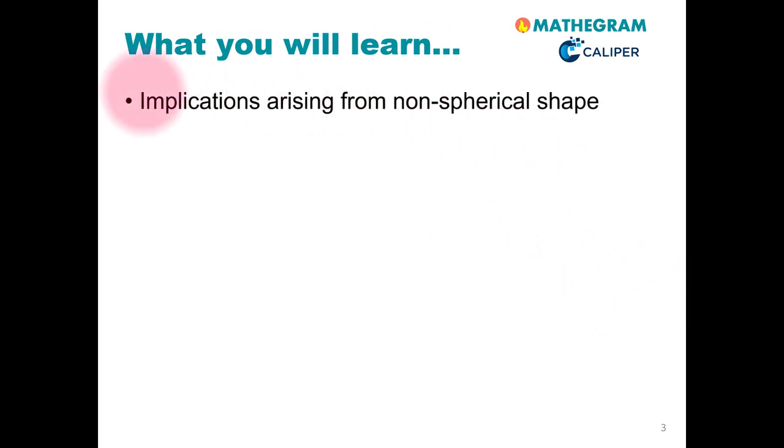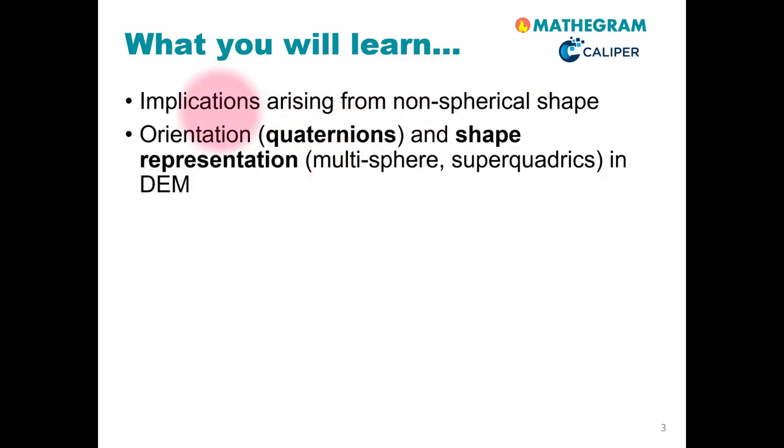First, I would like to go into the implications arising from non-spherical particle shape. You will see that there are multiple implications that require our attention. You will see that orientation tracking of the particles is necessary, and for that we typically use quaternions. So we will talk a little bit about this.